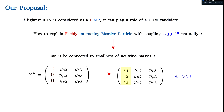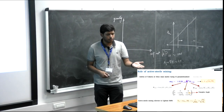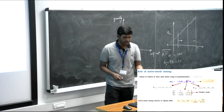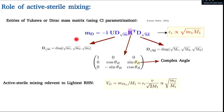We parameterize the interaction coupling of the lightest right-handed neutrino with small numbers epsilon_1, epsilon_2, epsilon_3. Using the Casas-Ibarra parameterization, we can show that this small epsilon is connected with the small lightest neutrino mass m_1. The active-sterile neutrino mixing of the lightest neutrino is also proportional to this small epsilon.